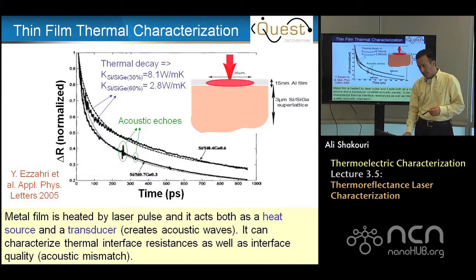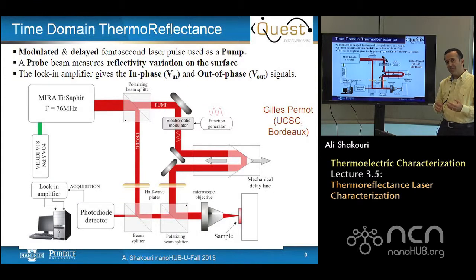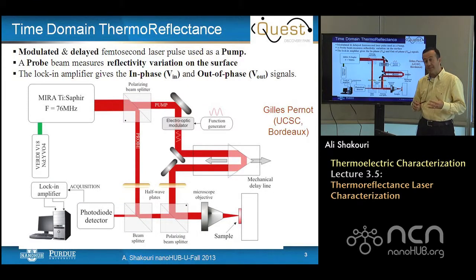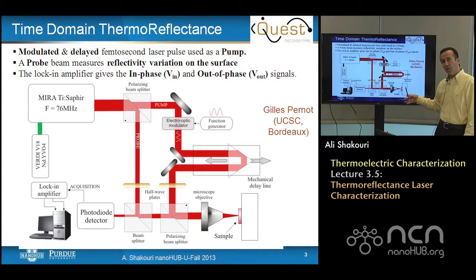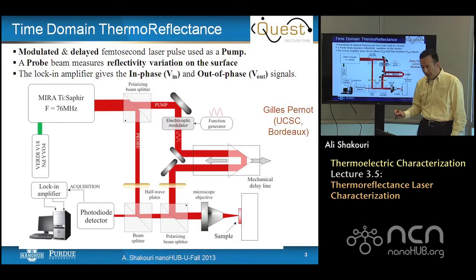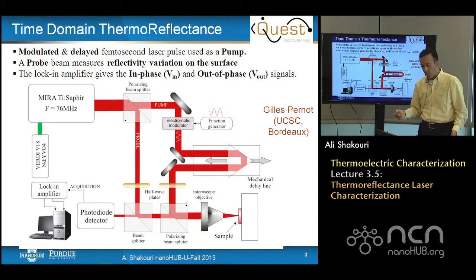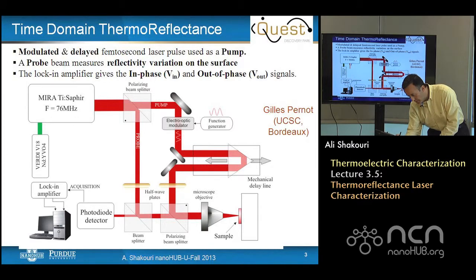About 10 years ago there was a detailed study of this technique — time-domain thermoreflectance — that actually taught us that we really have much more information in such signals. A femtosecond laser pulse is coming, but in reality what you have is often an oscillator with frequencies on the order of megahertz. In this case, it will be a 12-nanosecond repetition rate.